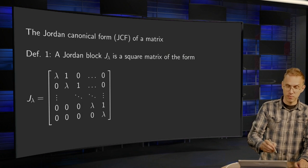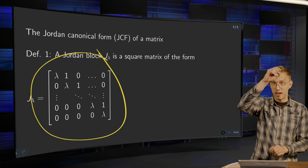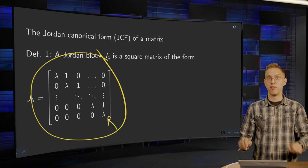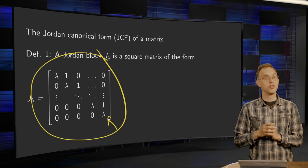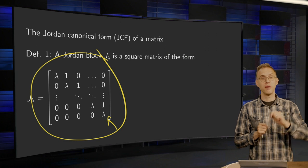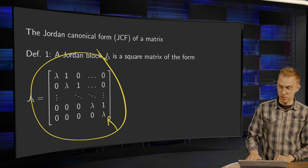A Jordan block is a square matrix like this. It has lambdas on the diagonal and then ones above it. So it is quite close to a diagonal matrix. The lambdas are on the diagonal, all the same, and then only the ones are above. And apart from that, we have zeros.